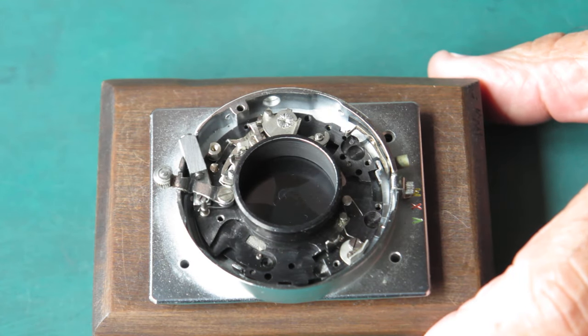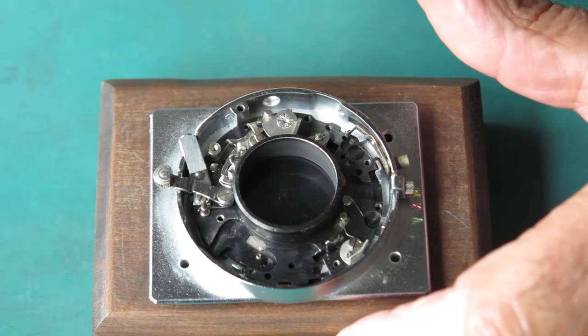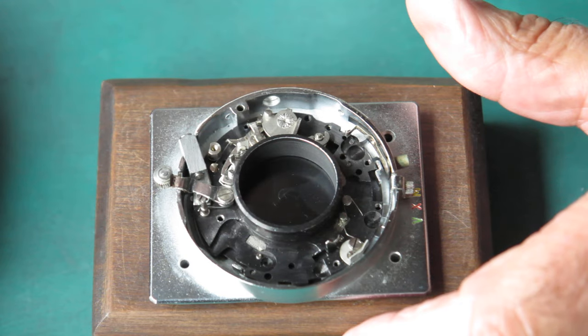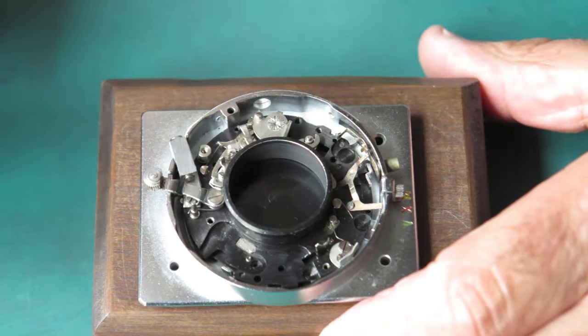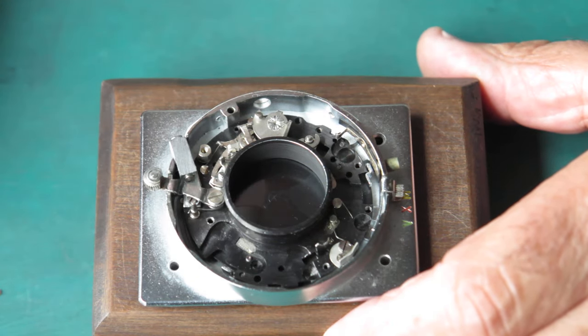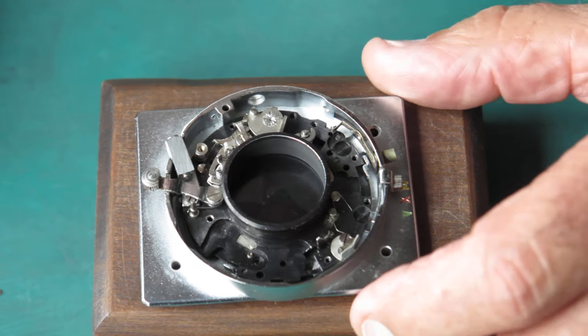The next thing we need to do with the shutter is to put the flash contacts back in place. The one that we need to put back in place first is this one. This is the flash contact that does our M sync, or flash bulb sync.